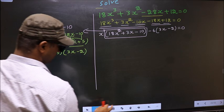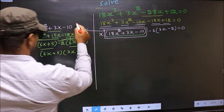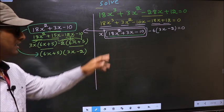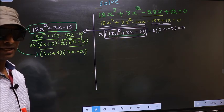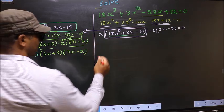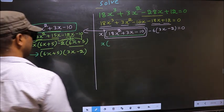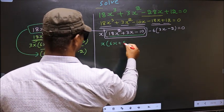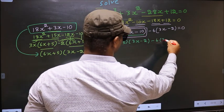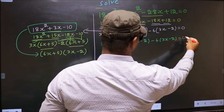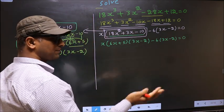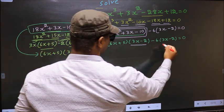In place of this quadratic, we substitute (6x + 5)(3x - 2). So the equation changes to x(6x + 5)(3x - 2), and the -6(3x - 2) part has no change. Now from this entire equation, what can be taken out common is (3x - 2).